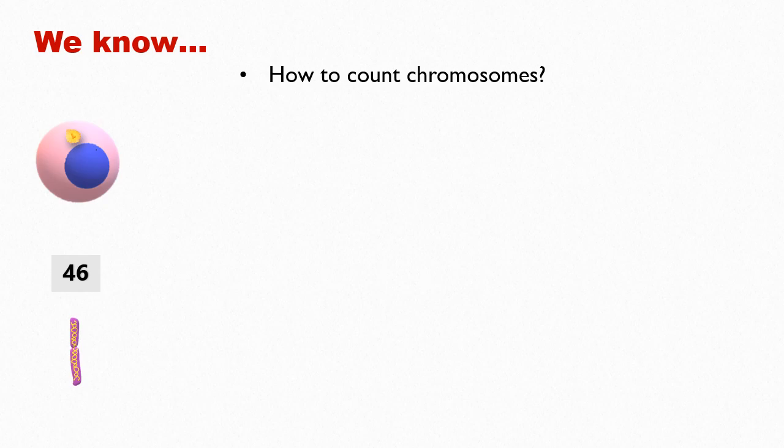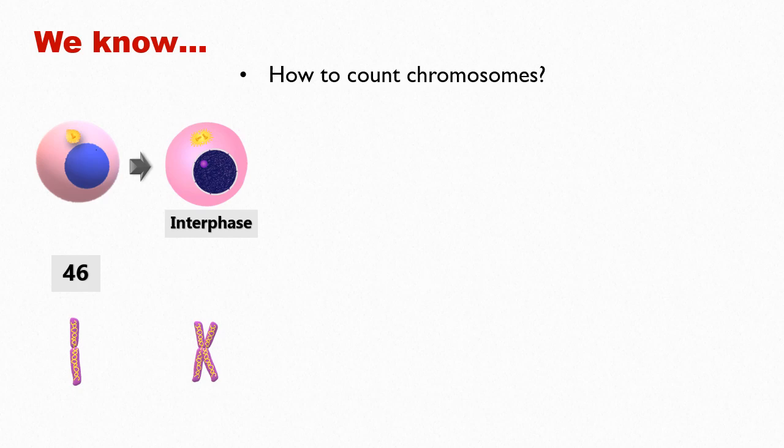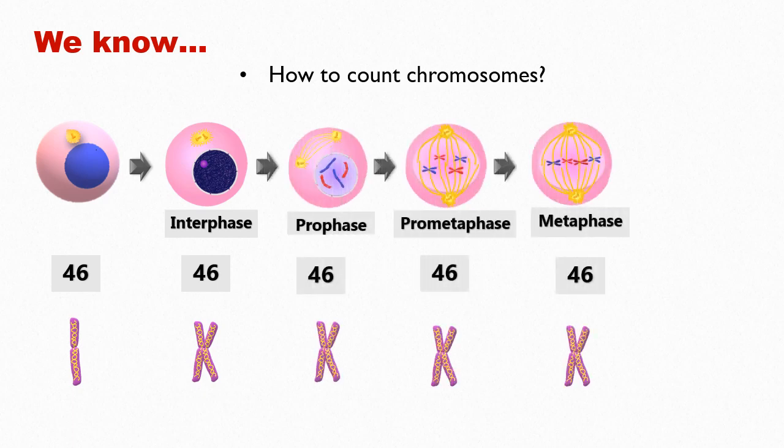Each chromosome has a centromere and two arms. If this cell is destined to divide by mitosis, then it will first undergo chromosome duplication. Remember that duplicated chromosomes remain tightly bound to each other at the centromeric region, so chromosome number is still 46. This bond at the centromere of sister chromatids is maintained till the metaphase stage of mitosis. In metaphase, chromosomes are clearly distinguishable, but the chromosome number is still 46.